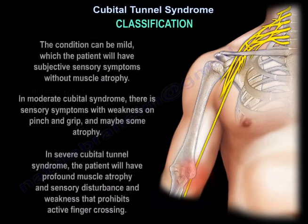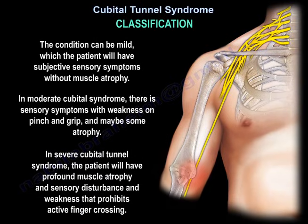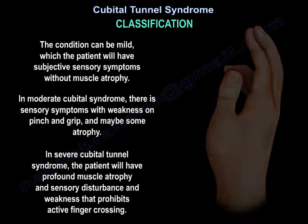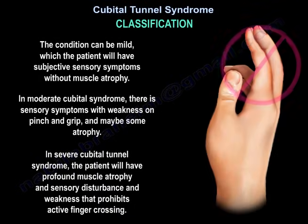Classification: the condition can be mild, where the patient has subjective sensory symptoms without muscle atrophy. In moderate cubital tunnel syndrome, there are sensory symptoms with weakness on pinch and grip and possibly some atrophy. In severe cubital tunnel syndrome, the patient will have profound muscle atrophy, sensory disturbance, and weakness that prohibits active finger crossing.